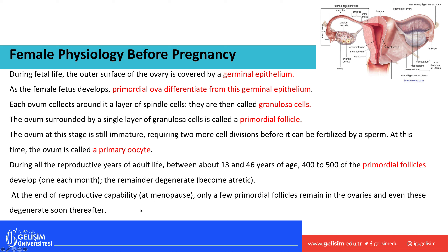During menopause, there are essentially no more viable eggs left — just a few primordial follicles that remain and eventually degenerate. At menopause, a female can no longer reproduce. Throughout her reproductive life, a woman has about 400 to 500 eggs, with one released every month.